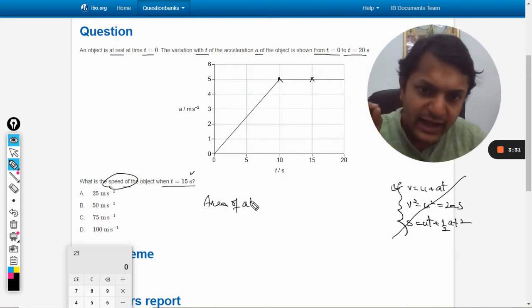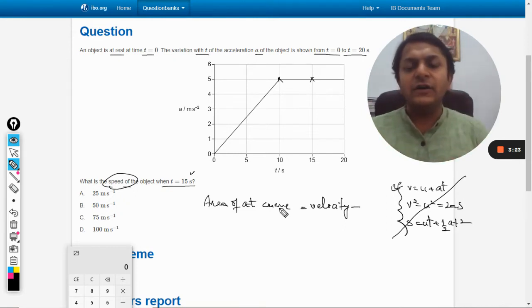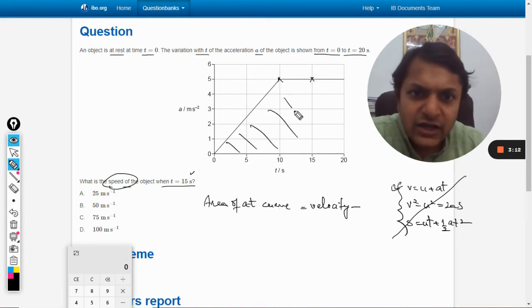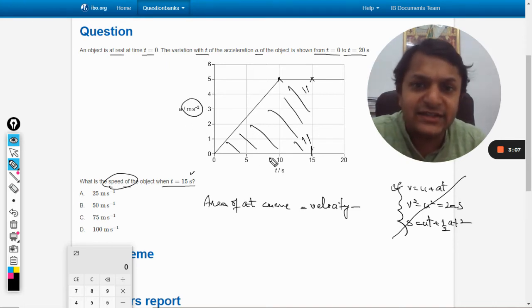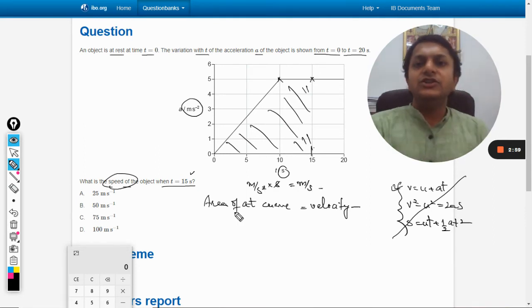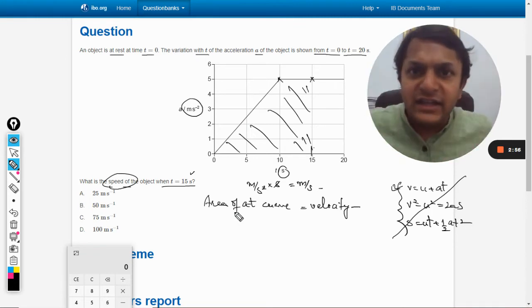area of AT curve will give you velocity. So as we have done in other videos also, in these kind of questions, we have to see the SI unit of the area of the graph. Like for example, this is the area for this area. If you want to find this area, you would have to multiply acceleration with time that is second. So meter per second square multiply by second, it has become meter per second. So it is clear that the area under AT curve will give you the instantaneous velocity.